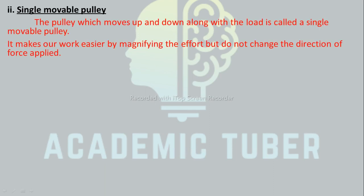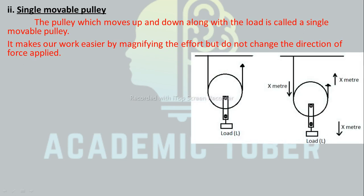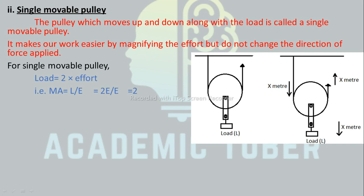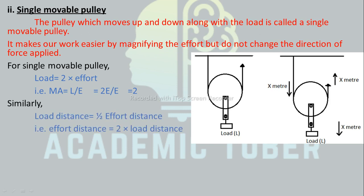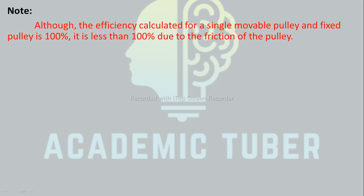Single movable pulley: a pulley which moves up and down along with the load is called a single movable pulley. It makes our work easier by magnifying the effort, but does not change the direction of the force applied. For a single movable pulley, load equals 2 times effort, so MA equals L divided by E equals 2E divided by E equals 2. Similarly, load distance equals half the effort distance, so VR equals 2. Since MA and VR are equal, efficiency equals 100%. Although efficiency is calculated as 100% for both types, it is less than 100% in practice due to friction.